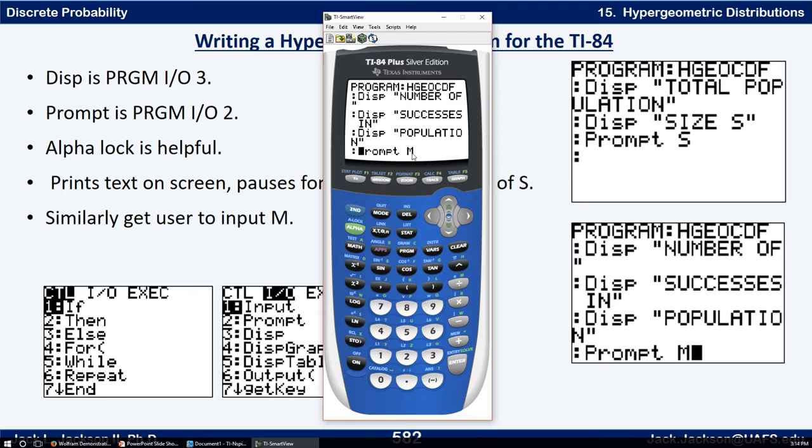It says right here over here on this slide. That helps. And then you put in M. So now what's it going to do? It's going to stop at this point and ask us to put in a value for M when we run it. After that we display sample size prompt N.